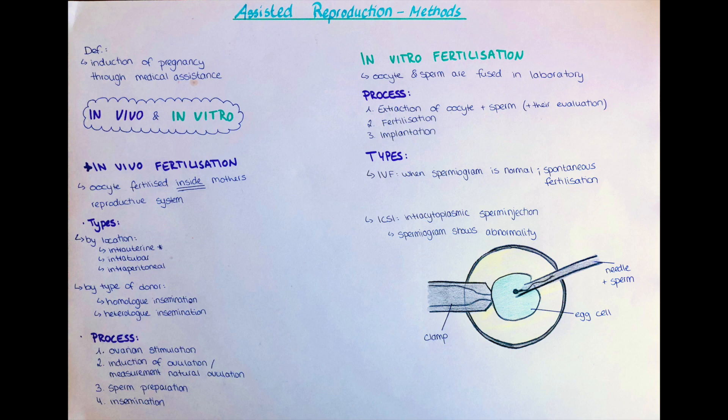Intraperitoneal insemination is rarely used, but I wanted to mention it for completeness. The idea of in vivo fertilization is to bypass certain barriers that the female reproductive system has for the sperm to overcome.